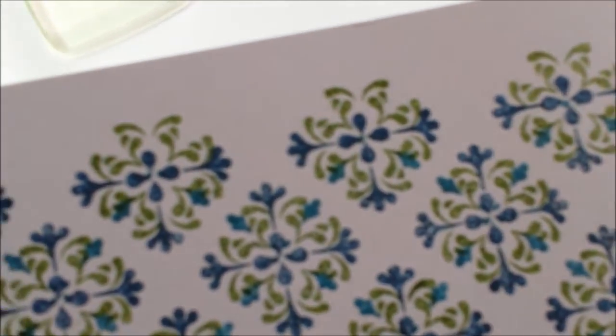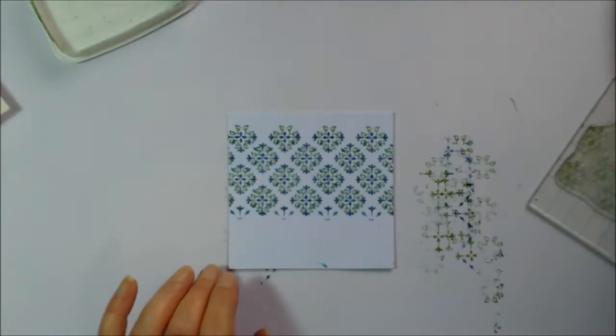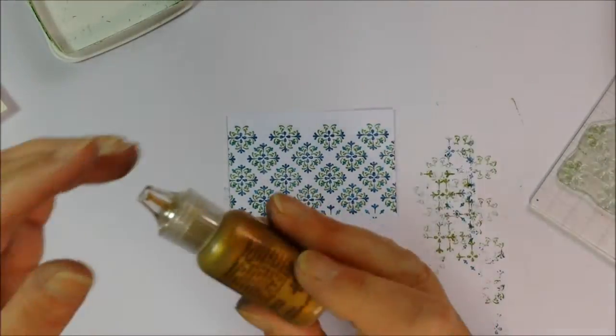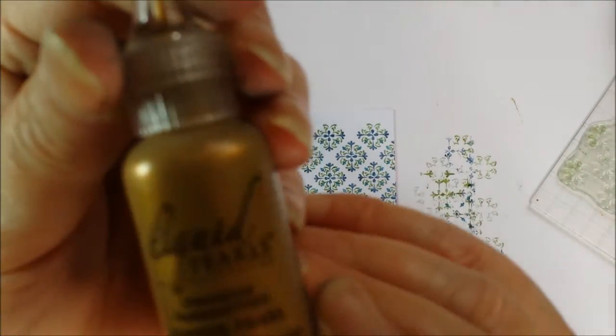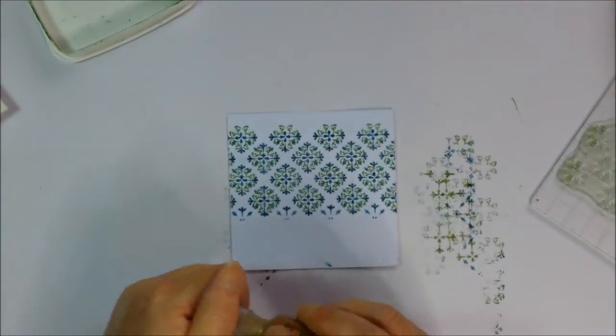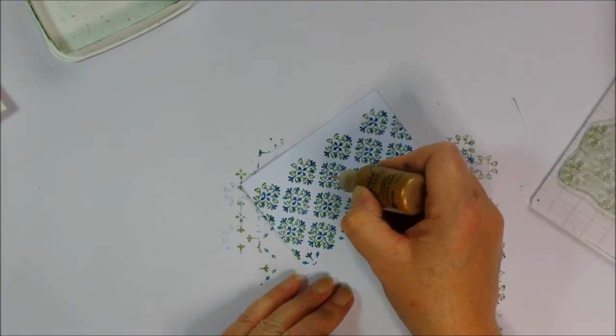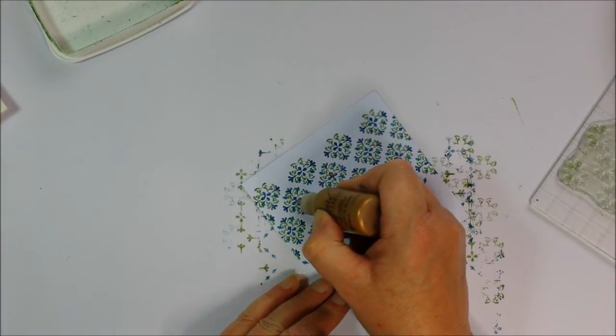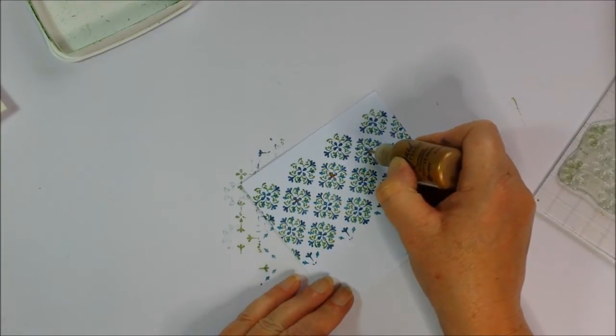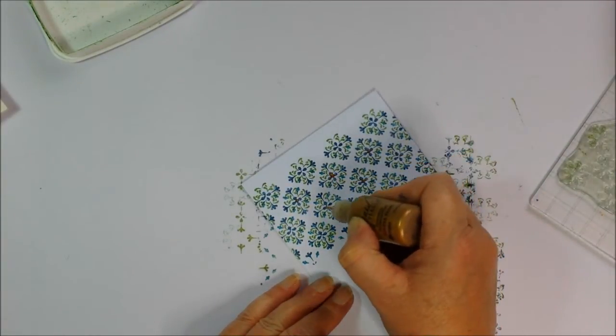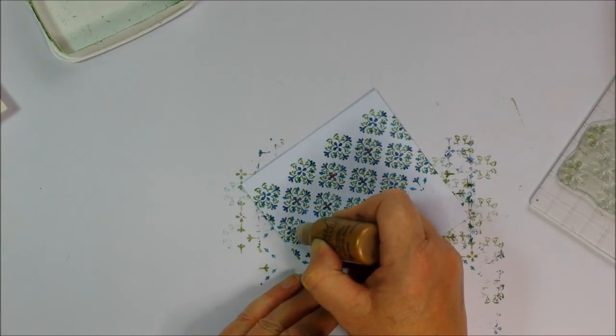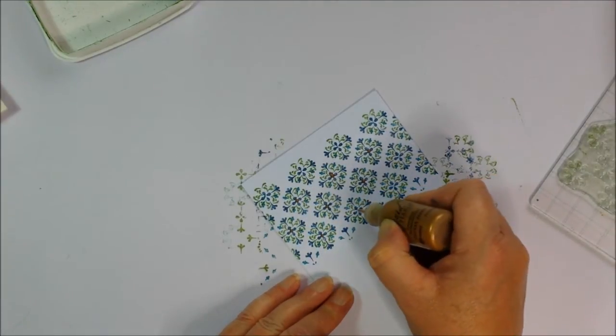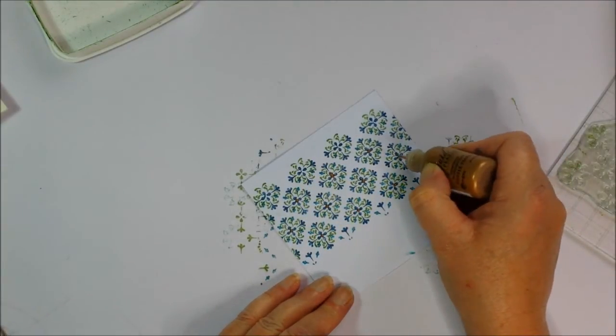If you're not a hundred percent happy with your lining up, one thing you can do is use a little bit of liquid pearls, stickles, something like that. Just pop it into the centre of these flowers and it disguises any little bits where it's not quite overlapping properly.